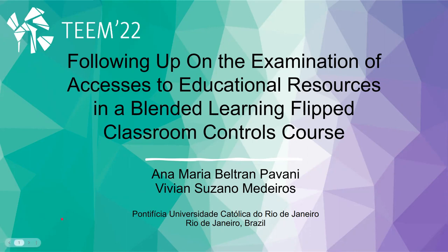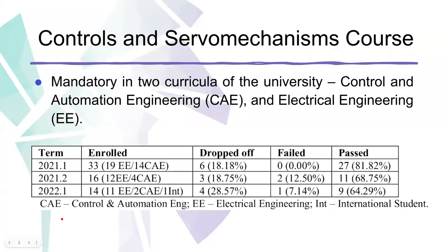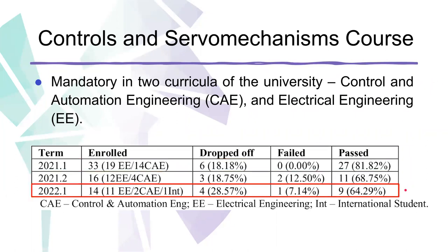This work addresses specifically how students access the courseware of the controls and servo mechanisms course at PUC-Rio during three semesters: the first semester of 2021, the second semester of 2021, and the first semester of 2022.